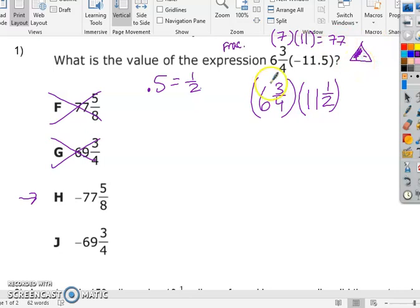So remember when we multiply, we do taxes, we don't do an LCD. So we make this improper. 6 times 4 plus 3. What is 6 times 4 plus 3? Well, 6 times 4 is 24 plus 3 is 27 over 4. And then 2 times 11 plus 1. What is 2 times 11? Then plus 1. And hopefully you get 23. 2 times 11 is 22 plus 1 is 23.